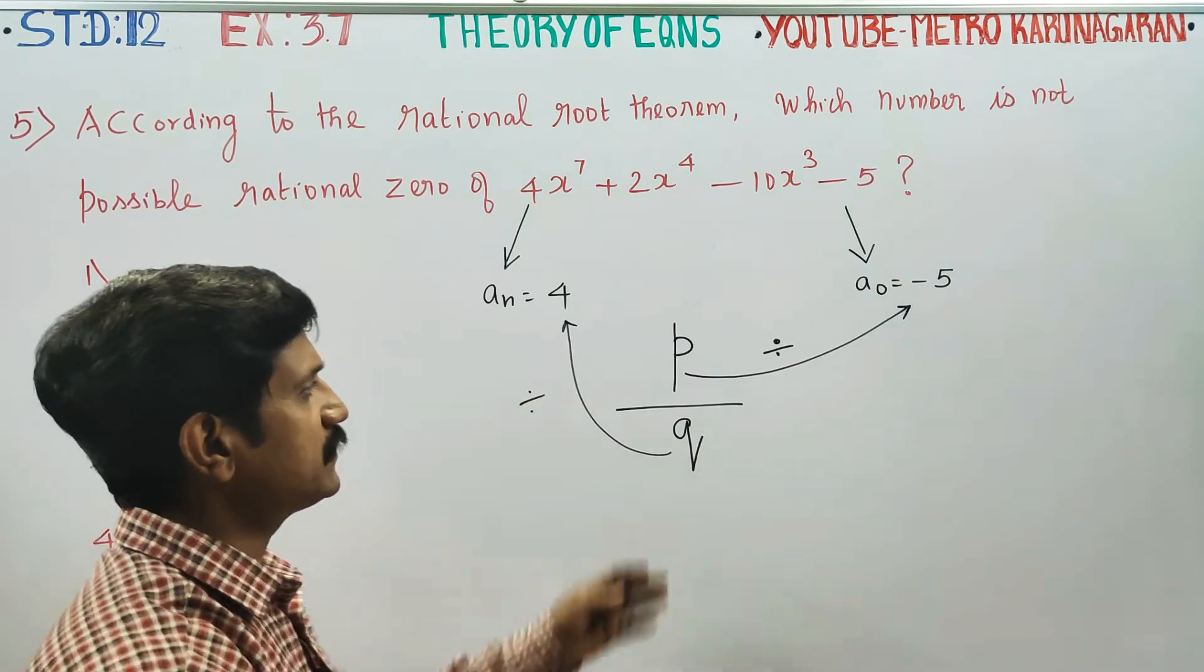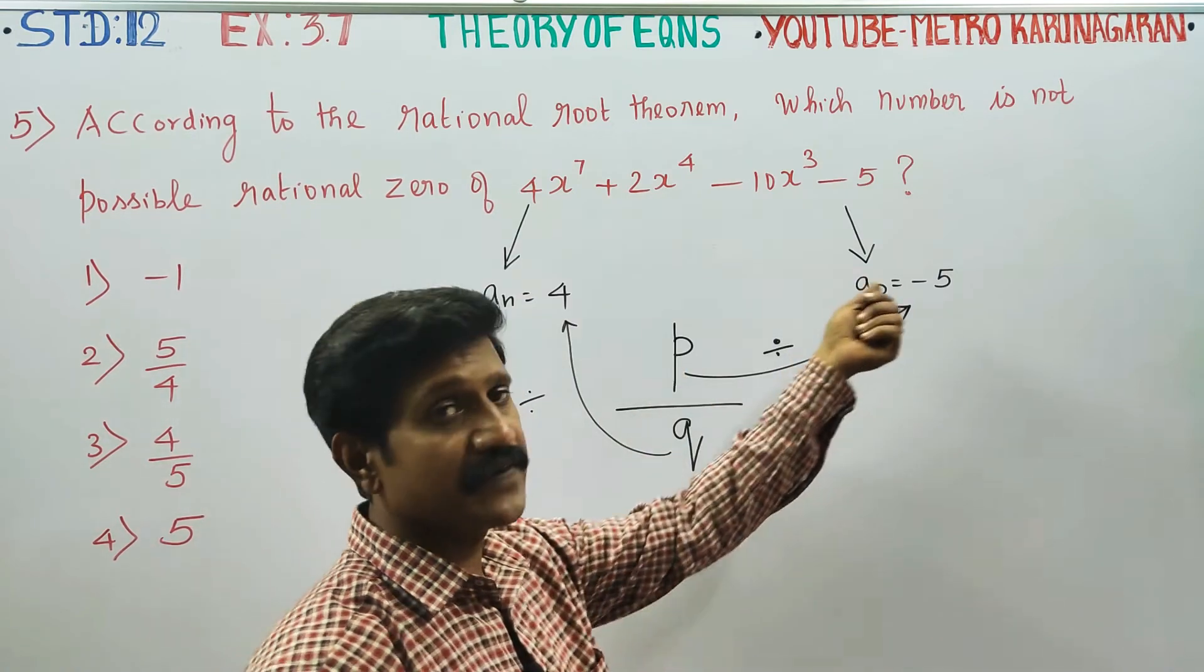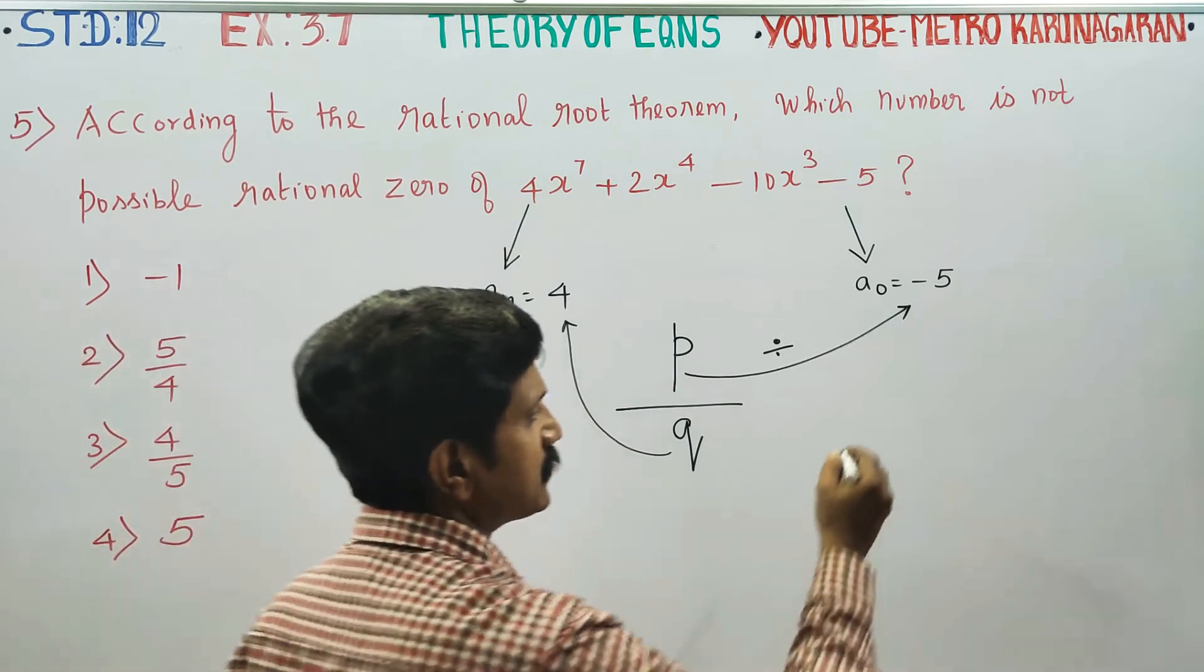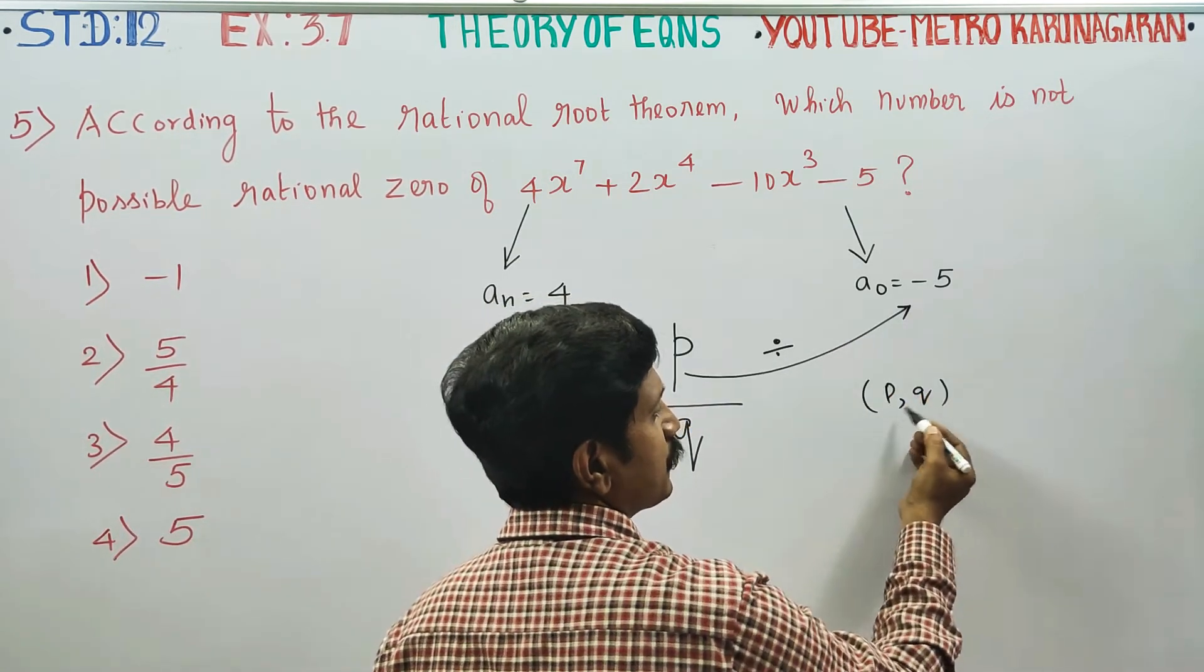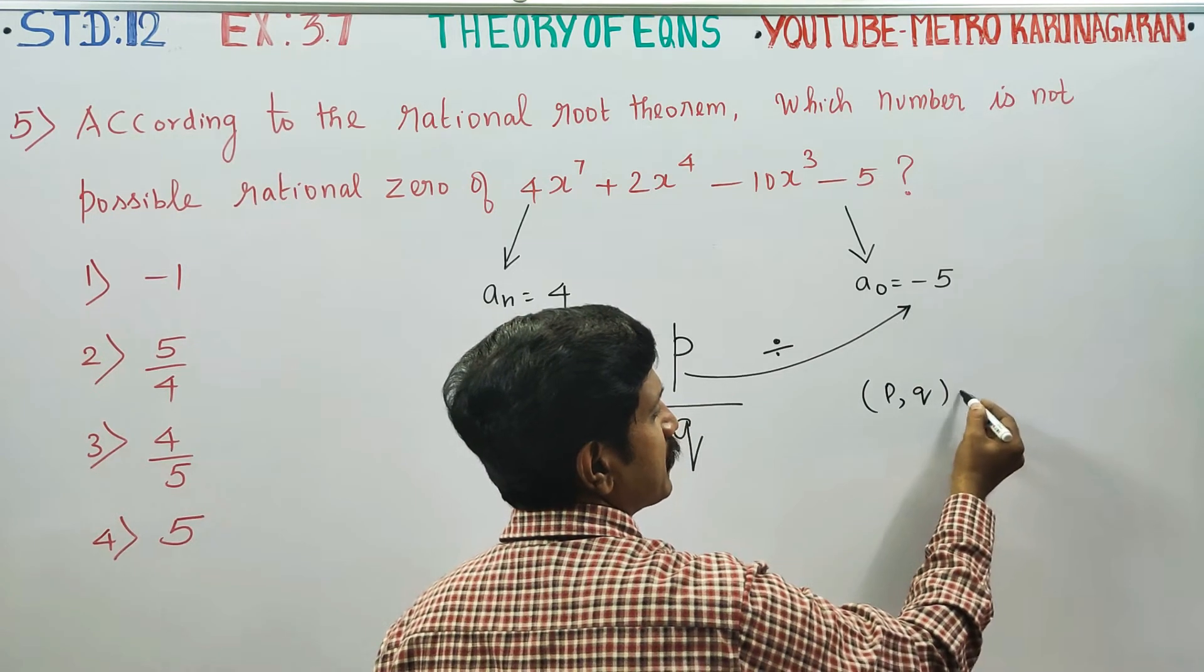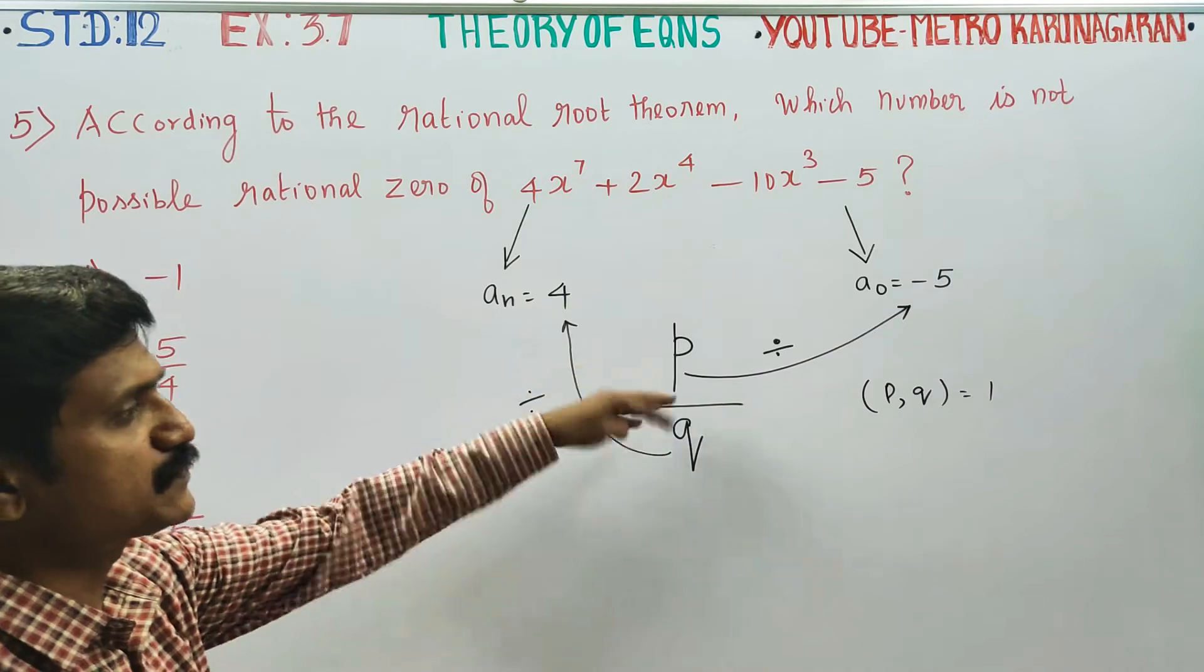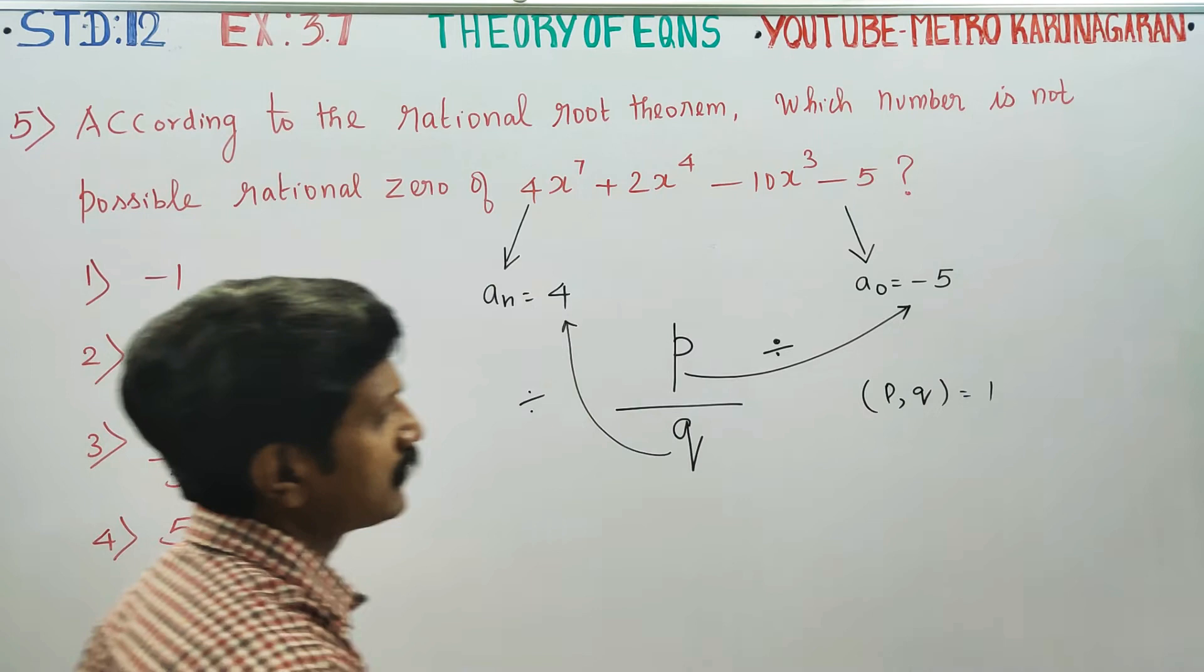You have to write the factors of minus 5. That is, if you write a number, it must divide minus 5. q must divide 4, such that the GCD of p and q, or the highest common factor, must be 1. That is, they must be coprimes. Their HCF or GCD must be just 1.